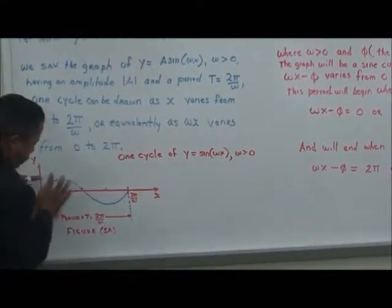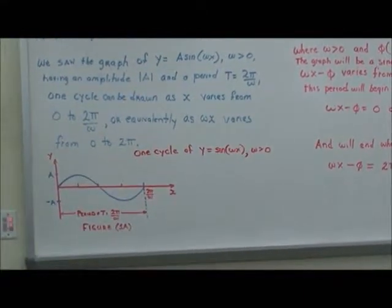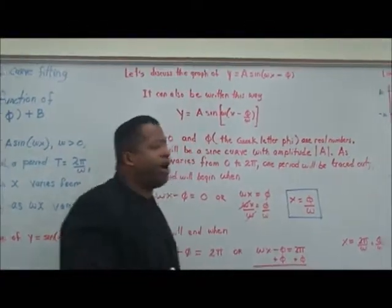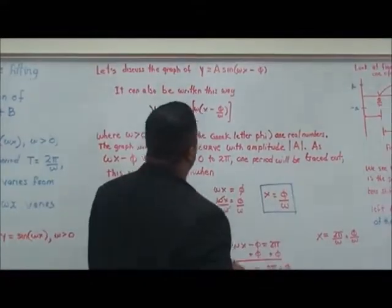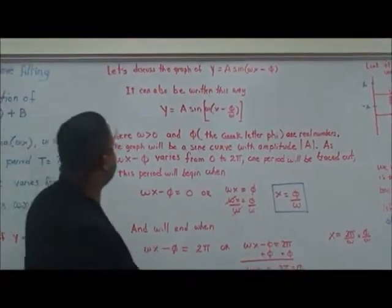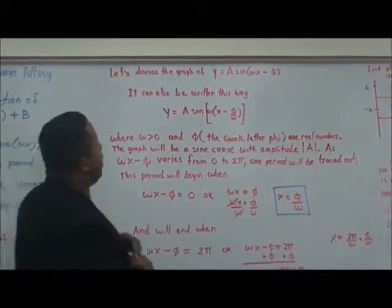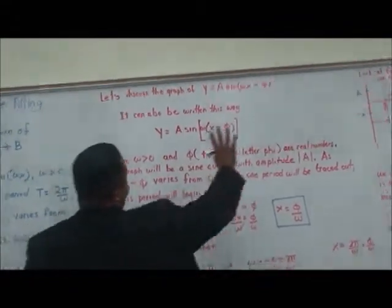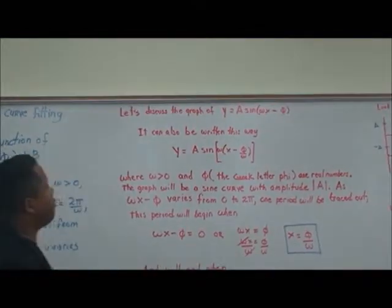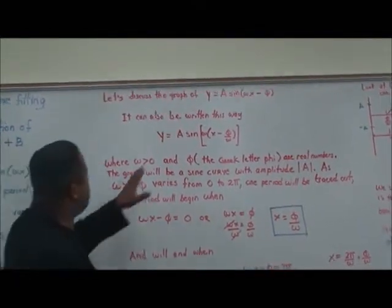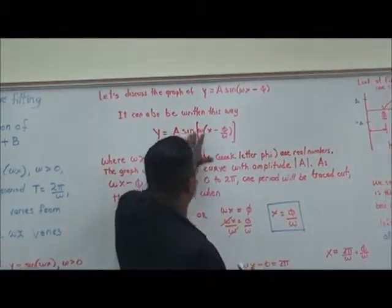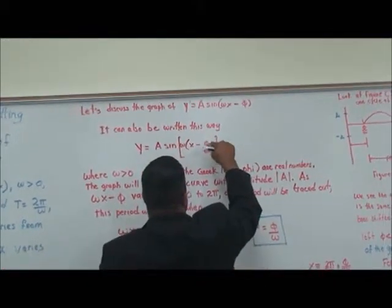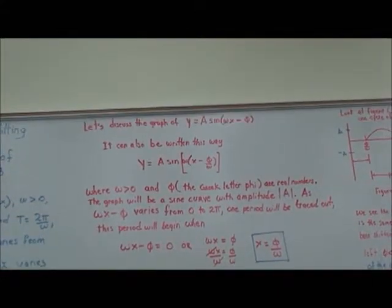Now let's discuss the graph of y equals A times sine(ωx minus φ). It can also be written by factoring out ω: y equals A times sine of ω times (x minus φ/ω). We're going to explain this in just a second, where we bring out ω times x minus φ/ω.